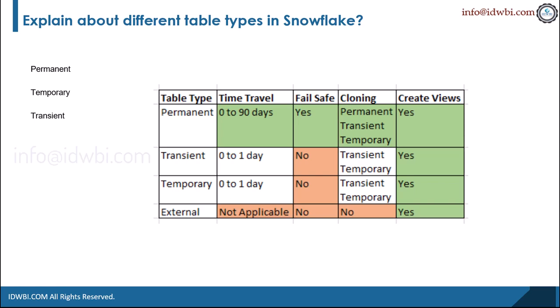You can think of transient tables as a medium between permanent and temporary. Permanent tables remain in your database until they are dropped and offer a high level of data protection and recovery. Temporary tables only last while your session is alive. Transient tables come in between: they do not have the data protection or recovery that permanent tables have, but they can be stored beyond the session.